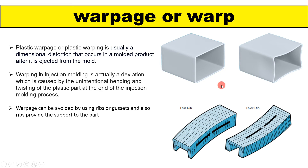In the picture, you can see one thin rib and one thick rib. For the thick rib, the bending is in one direction as shown by the arrow. It depends upon the thickness and also where and how we are using the ribs. To avoid warpage, we need to properly use the rib direction and also use the correct thickness of the rib, so that we can avoid warpage.